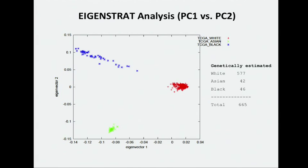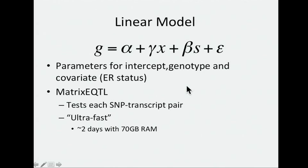Here's a plot of the first two principal components of our genotype data, and our 382 cases came from the red cluster you can see here. We represented the interaction between gene expression and genotype with a linear model with parameters for genotype and ER status, which is our covariate. We used the R package matrix EQTL to implement the EQTL analysis.